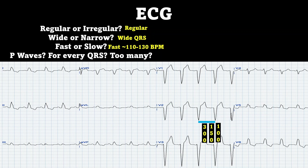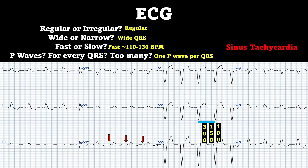Next, we're going to scour the whole 12-lead for P waves. The number one lead to look for P waves is V1, as it kind of views the right atrium. You can see a little bit there, but better looking ones are actually in AVF. There's also only one P wave per QRS — no excessive amount of P waves. So that's going to be our sinus tachycardia.